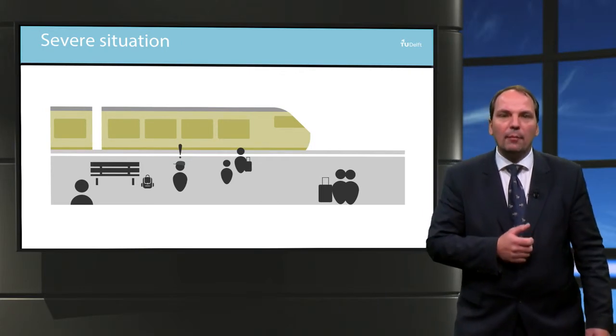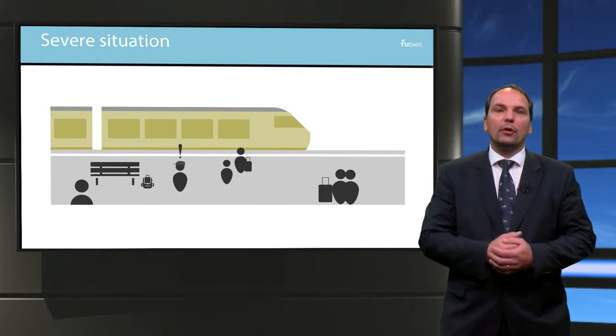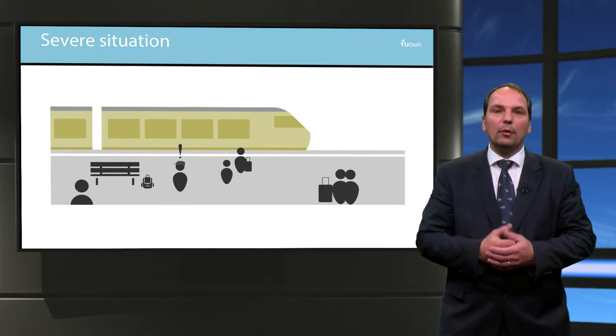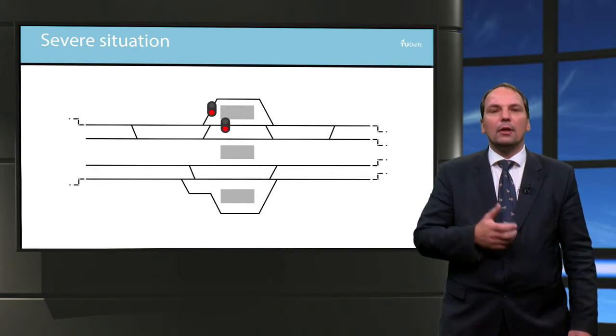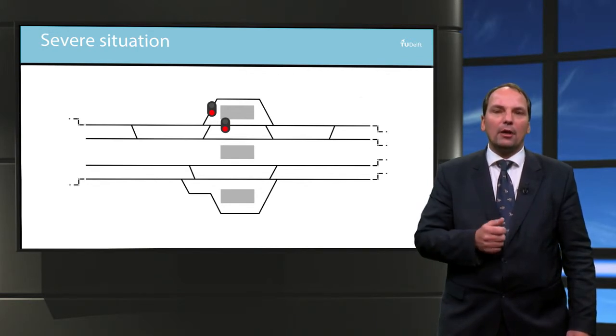When a service employee finds an abandoned travel bag on the platform connected to multiple tracks, it becomes more complicated. As a safety precaution, the train dispatcher takes both tracks out of service.